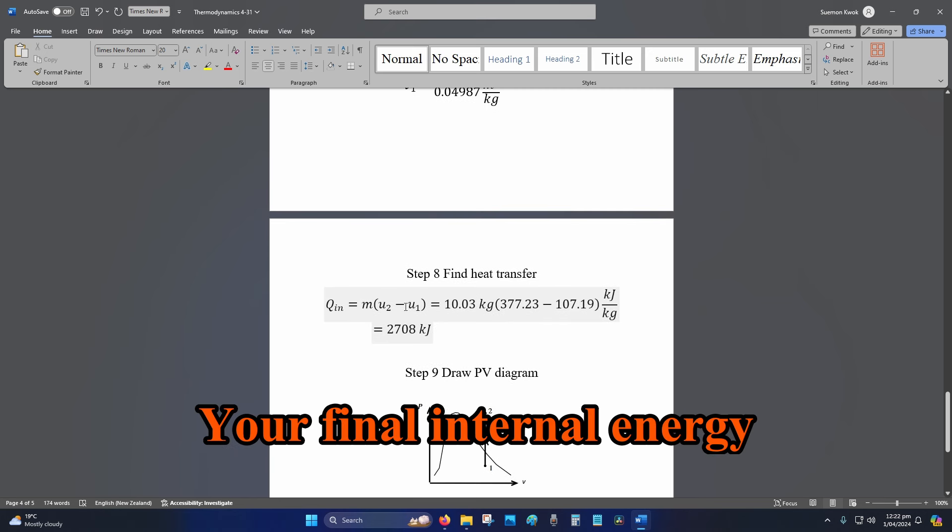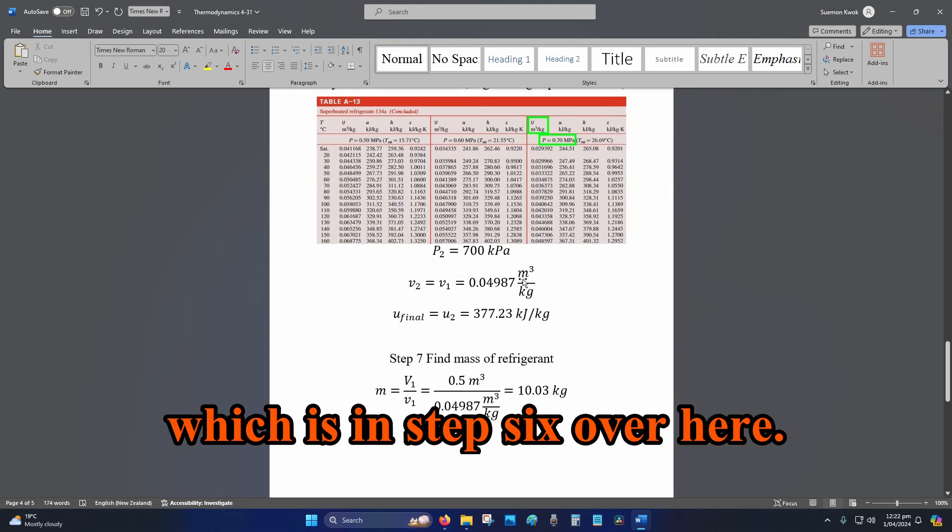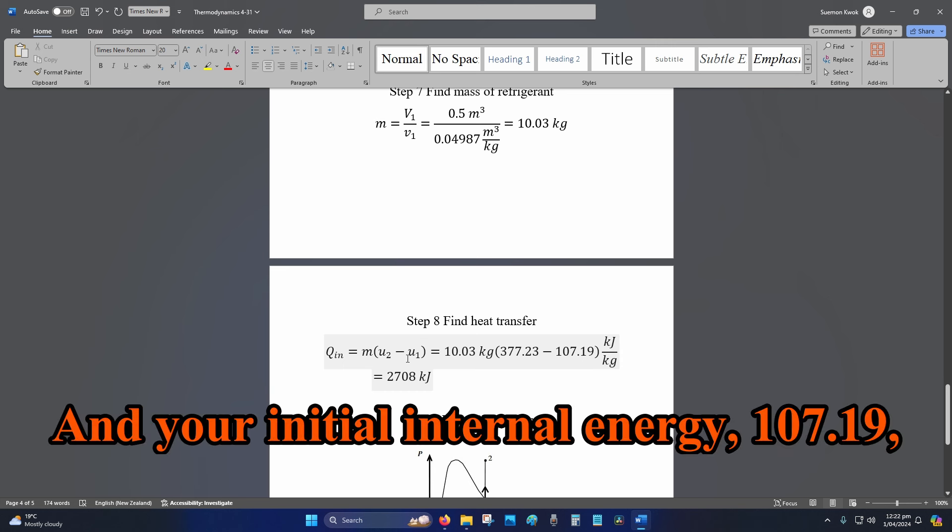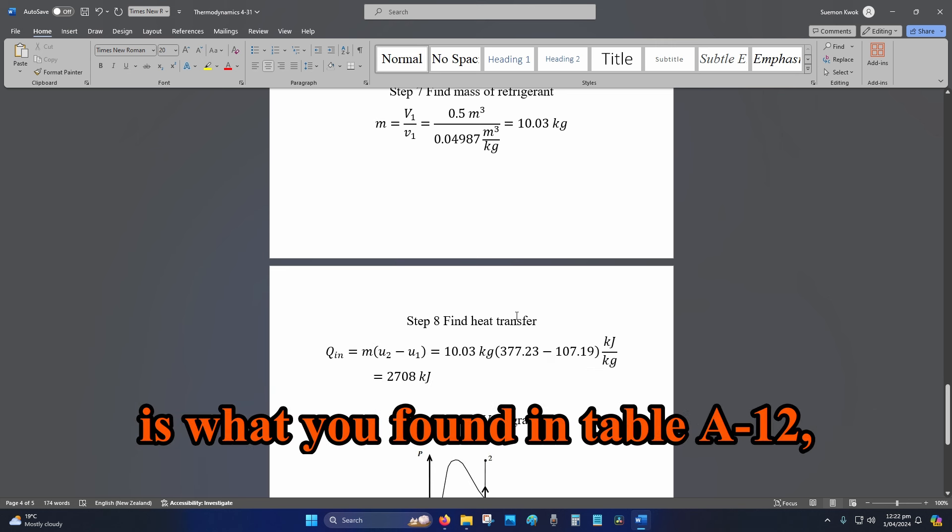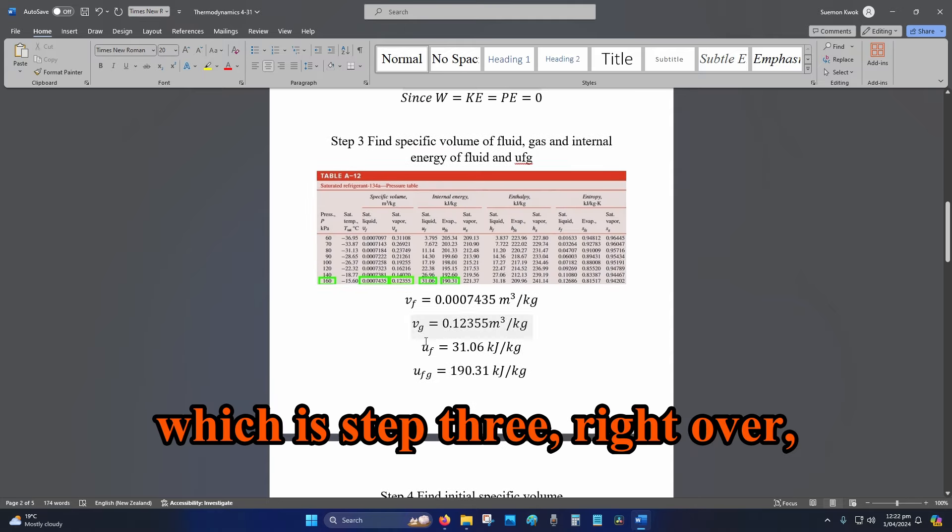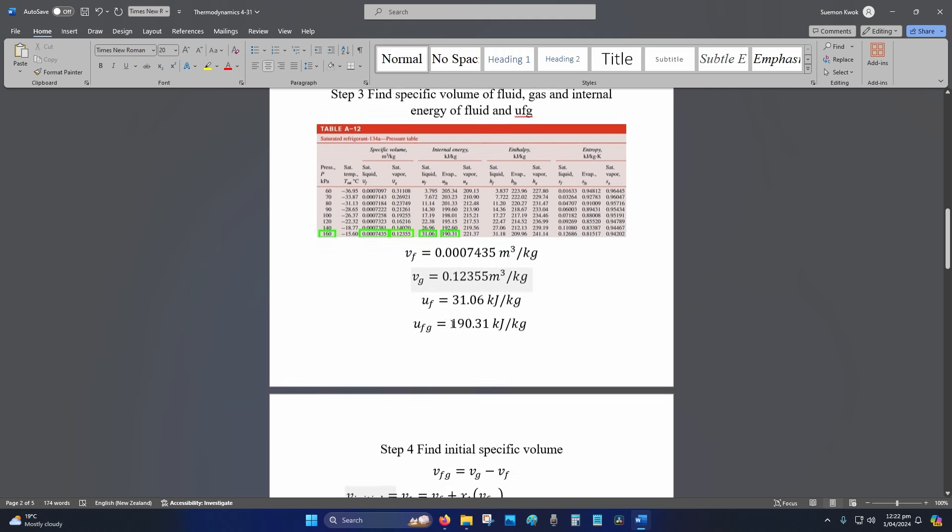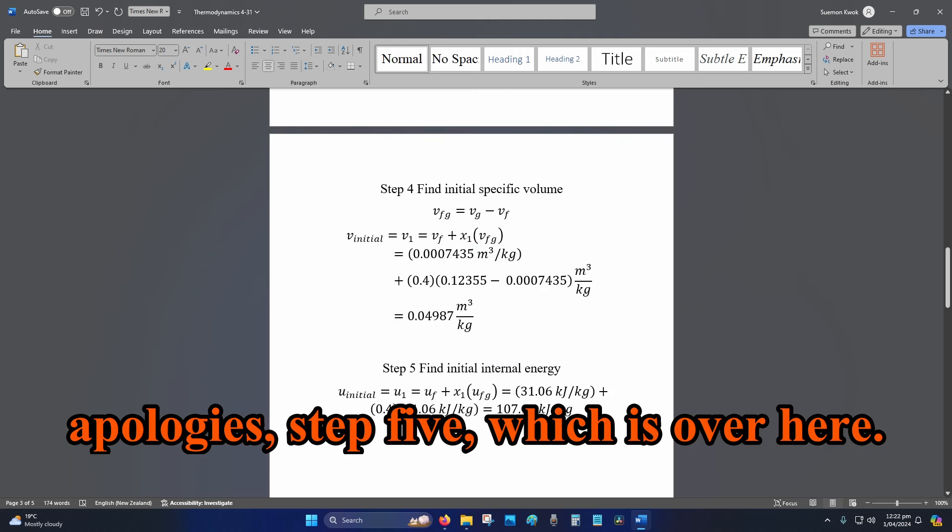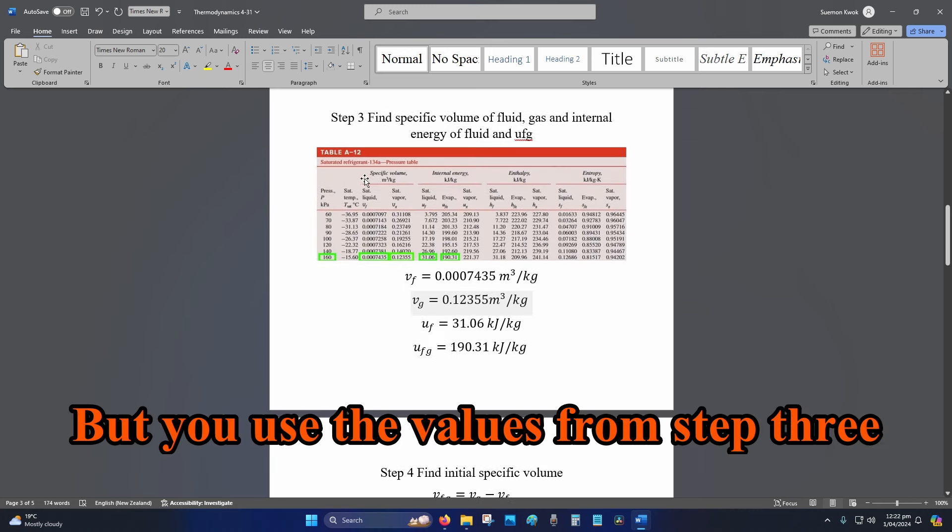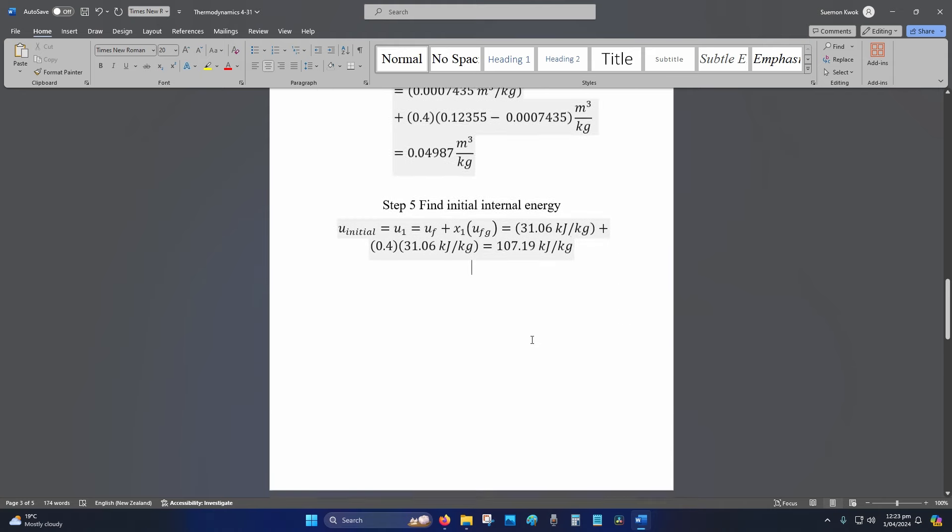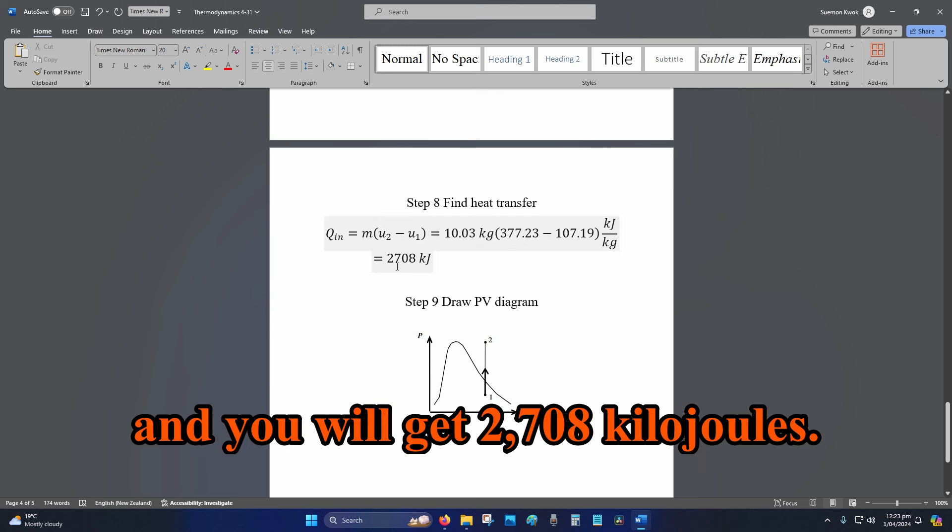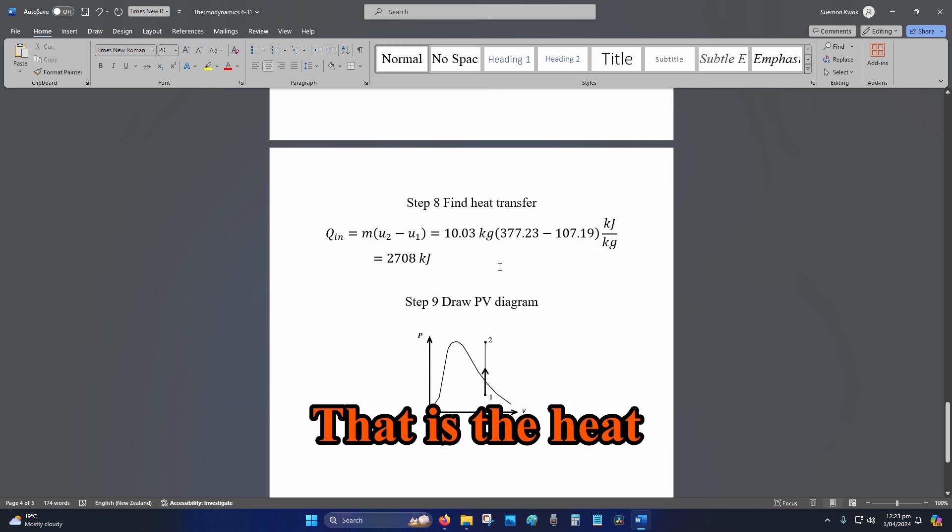Your final internal energy is what you found in EES in Step 6, and your initial internal energy, 107.19, is from Step 5, using values from Step 3. Plug in those values and you will get 2708 kJ. That is the heat transfer, and that is part B.